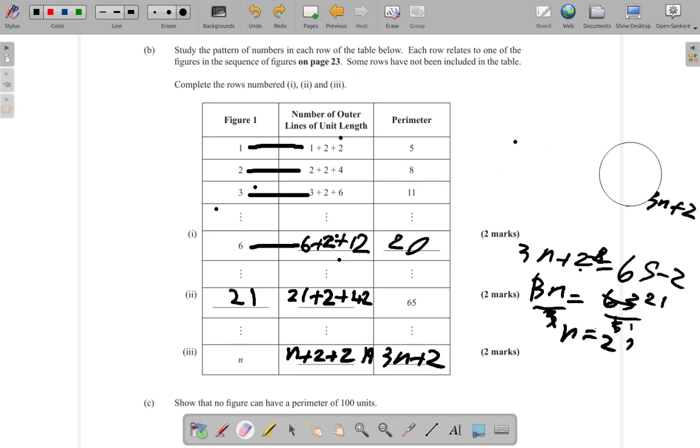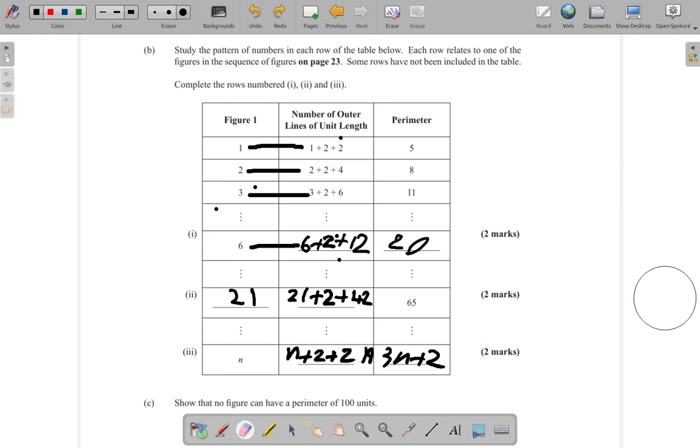Let me erase the previous work so we have some space here. Let me get rid of these dots and lines and so on from here. All right, now a perimeter of 100 units.